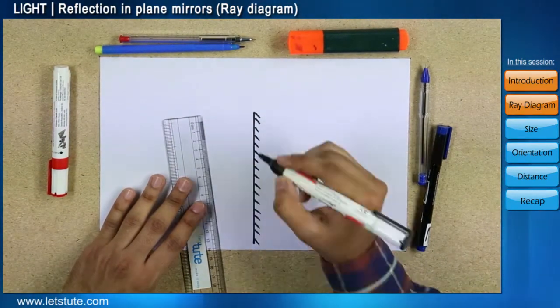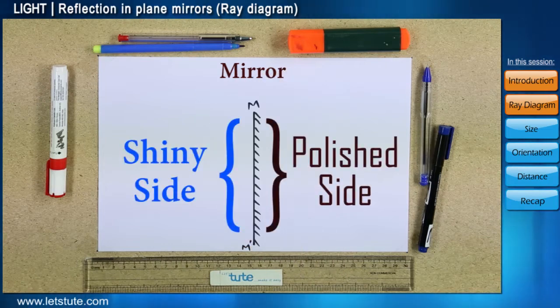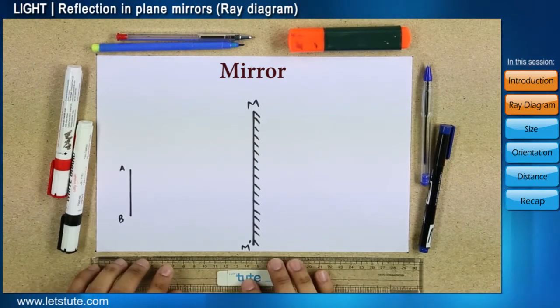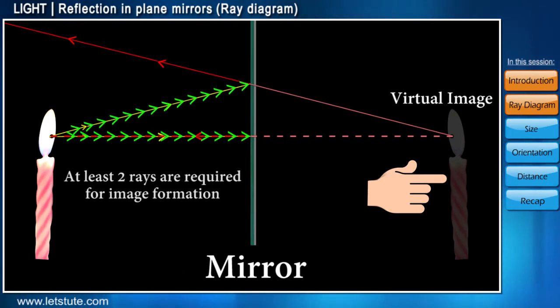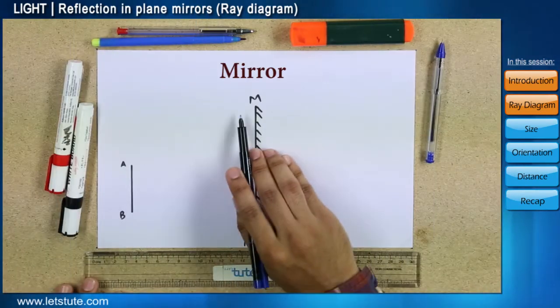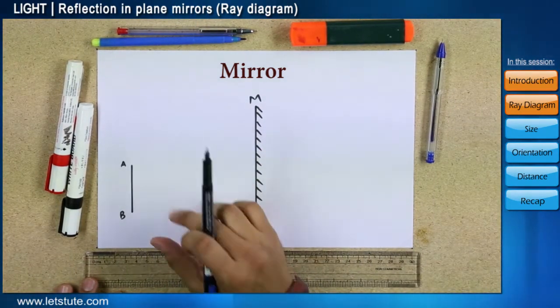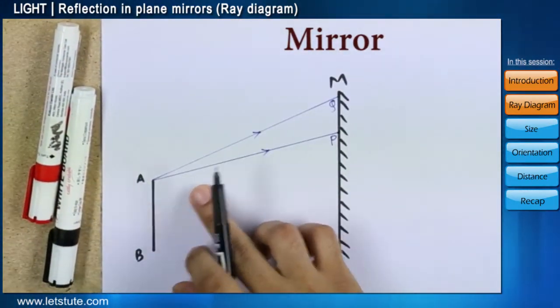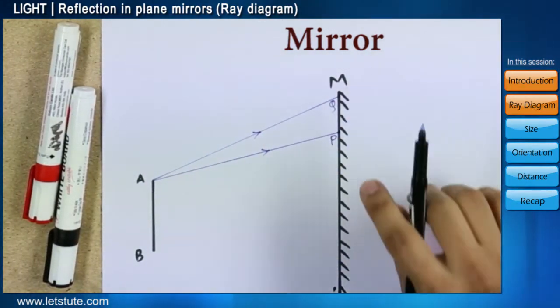Let there be a plane mirror denoted as M, M dash. Now, let there be any object AB placed in front of it. As mentioned before, for an image to form, at least two rays of light are required to be in the picture. So, let's assume that there are two rays coming from either part A or B of object AB. So, if the rays are coming from point A, then let AP and AQ be incident onto the mirror at points P and Q respectively.